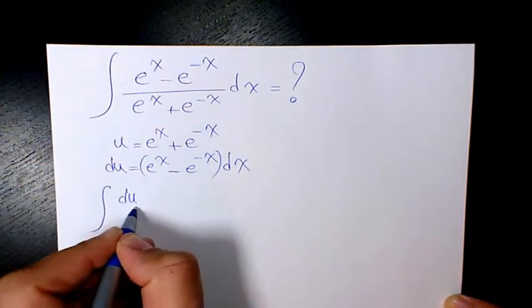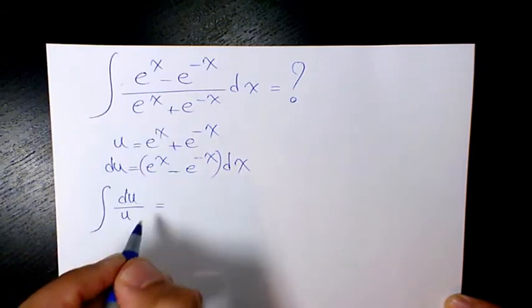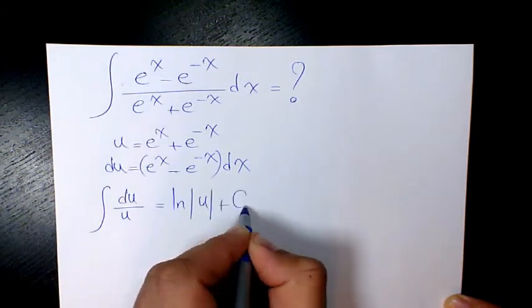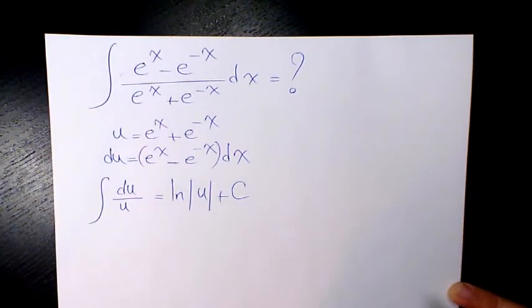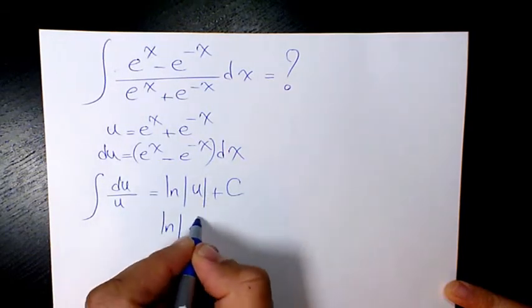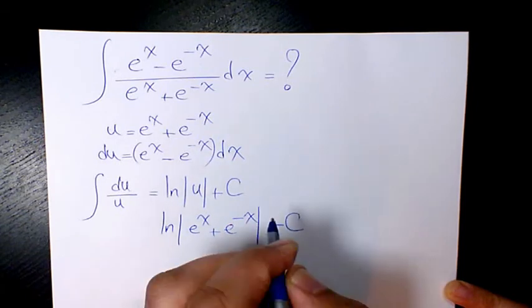Then after integration it will be ln u plus c. And then what is u? u is e to the power of x plus e to the power of negative x plus c.